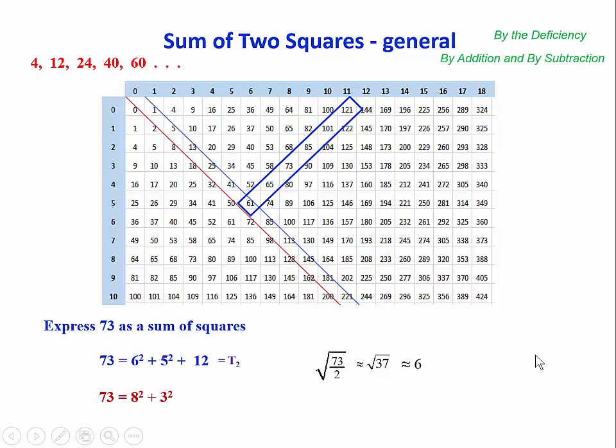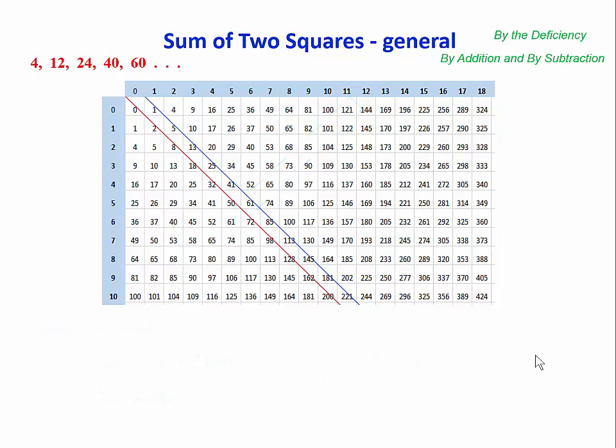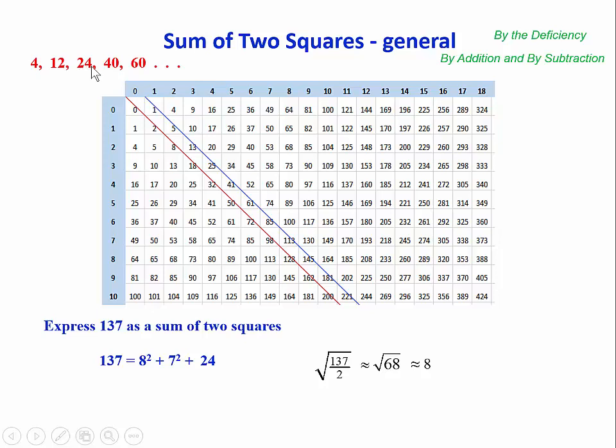So let's take another example. 137. OK, we're going to halve it and take the square root. We get 8. So we can say that 137 is 8 squared plus 7 squared plus some deficiency, which we find to be 24. Now because 24 is the third Tirthaji number, we add 3 to the 8 and subtract 3 from the 7, and we're done.